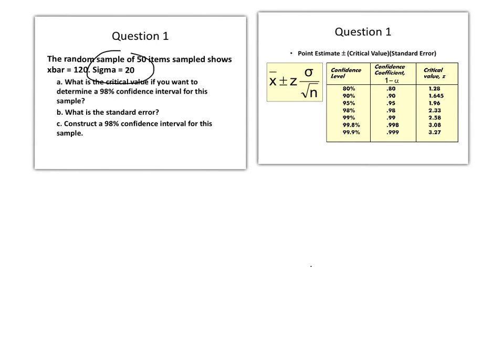When we're given Sigma we know that this is a standard normal distribution and we'll use a critical value of Z. The first question, part A, is what is the critical value if you want to determine a 98 percent confidence interval for this sample.